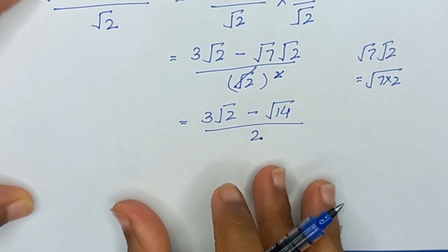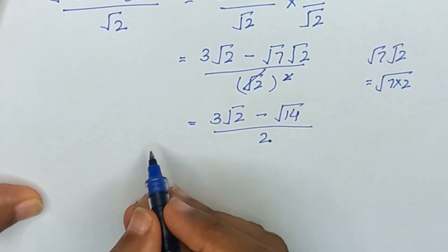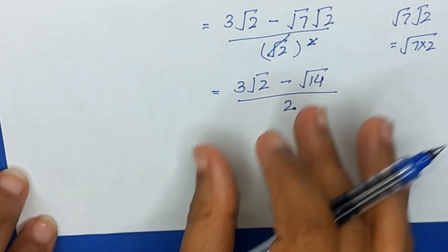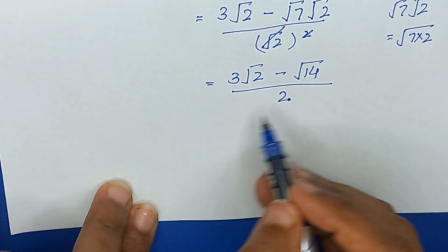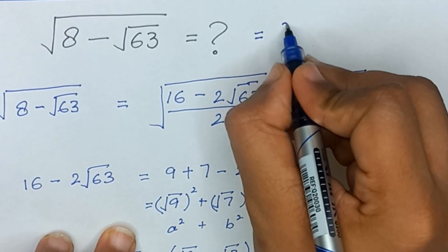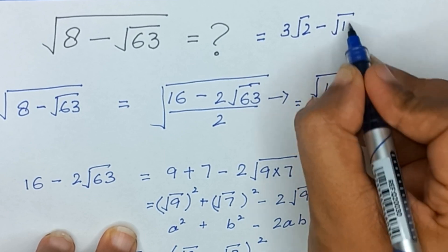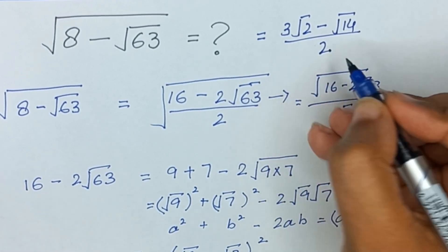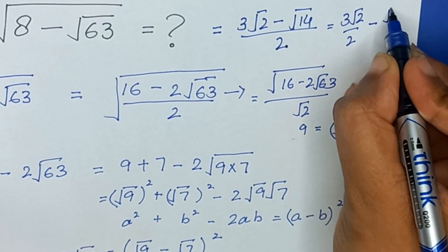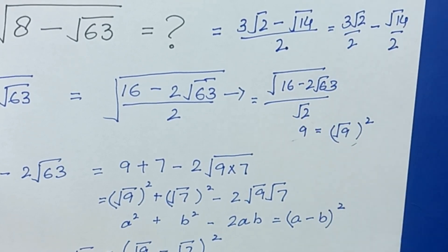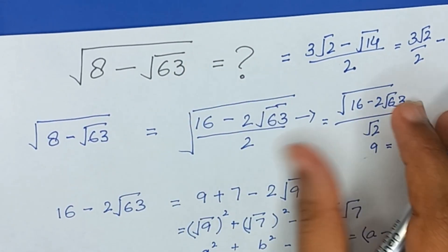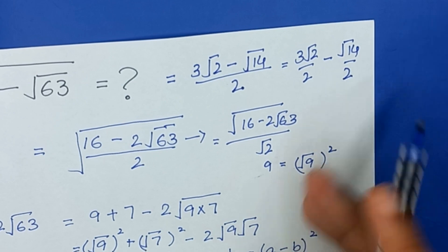So this means square root of (8 minus square root of 63) is equal to (3√2 minus √14) divided by 2. We can also write this as 3√2/2 minus √14/2. So this is the value of the given expression — the square root of (8 minus √63) equals 3√2/2 minus √14/2.